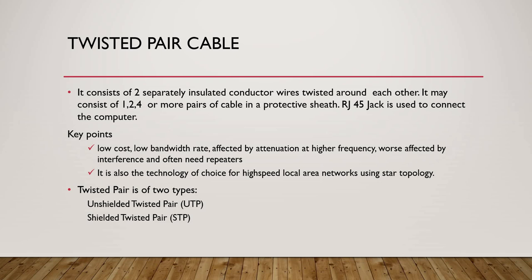Twisted pair cable consists of two separate insulated conductor wires wound around each other. There may be one, two, four, or more pairs of cable in a protective sheath. RJ45 is a special kind of jack used to connect the computer, and in our computer systems we use a four-pair cable to transmit data. Key points: low cost, low bandwidth rate, affected by attenuation at high frequency, worse affected by interference, and often needs repeaters for long-distance transmission. It is used for local area networks, especially in star topology.